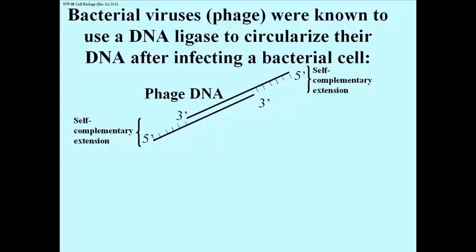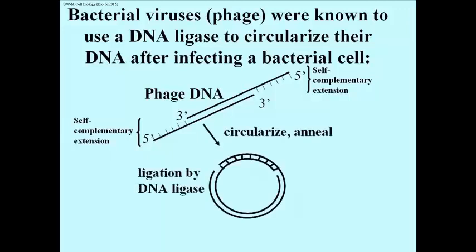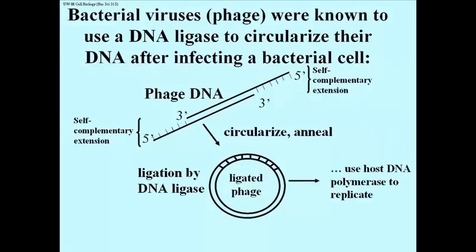DNA ligase was known for a different function before it was shown to be essential in replication. During a viral infection in bacteria, the DNA that enters the cell is a linear molecule with sticky or complementary ends, such as those shown here. Once in the bacterial cytoplasm, the linear DNA circularizes because of self-complementary ends. Then a DNA ligase encoded by the viral genome is produced in the infected cell to covalently close the circle.